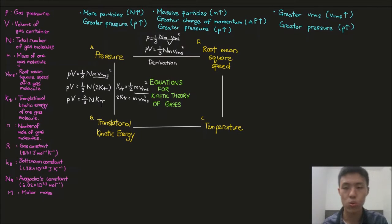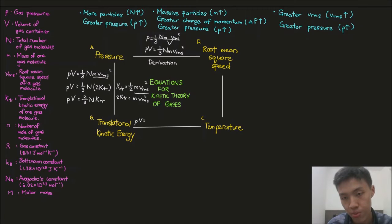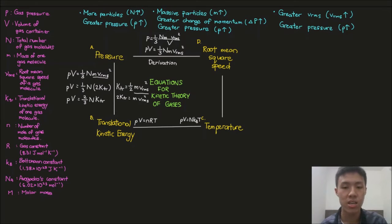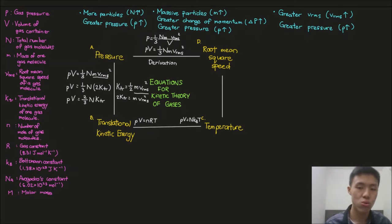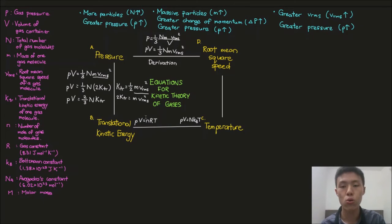The next step is relating translational kinetic energy to temperature, using the ideal gas equation. There are two versions: PV = nRT, and PV = N k_b T, where k_b is the Boltzmann constant — 1.38 × 10⁻²³ joule per kelvin. It is the per-particle counterpart of the gas constant. If you are doing per-mole calculations, use R; if you are doing per-particle calculations, use the Boltzmann constant.